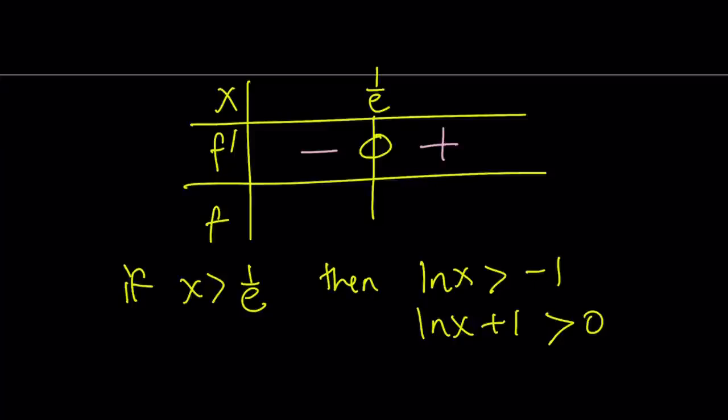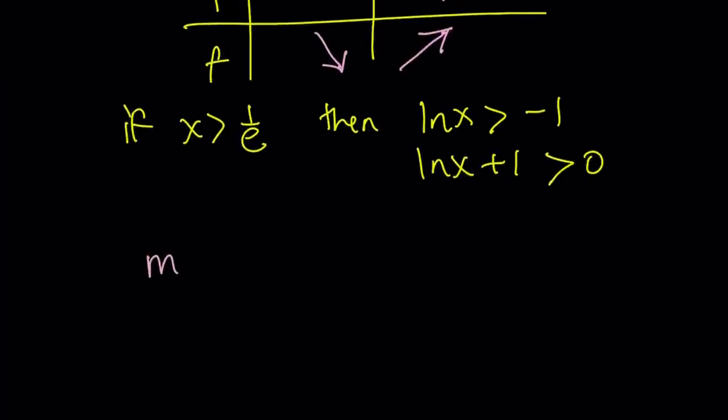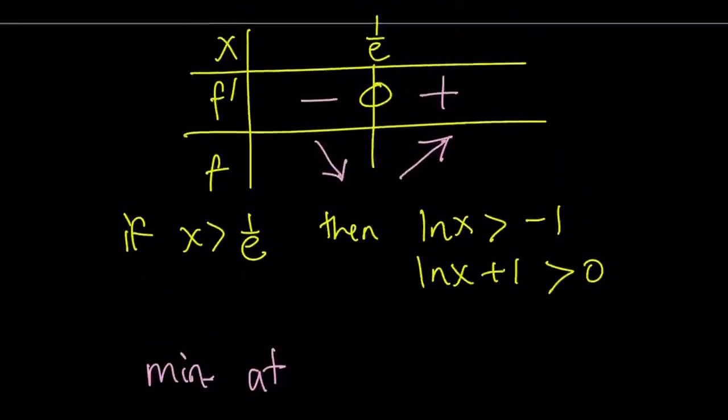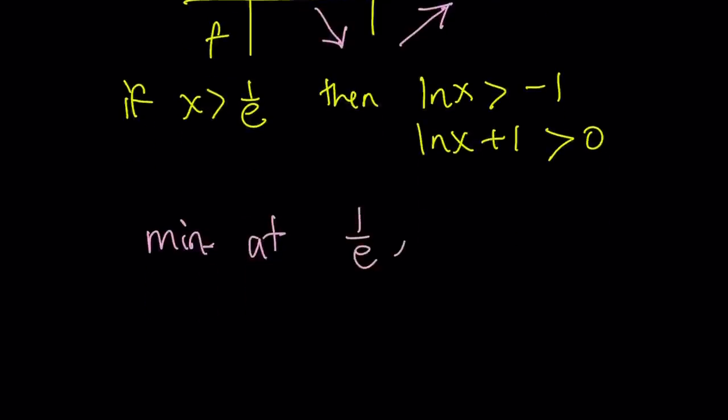which tells you that our function is going to be decreasing on the interval 0 to 1 over e and increasing on 1 over e to positive infinity, which means we have a minimum at x equals 1 over e. If you replace x with 1 over e using our function x to the power x, you're going to get the point 1 over e comma 1 over e to the power 1 over e. And that's our minimum point.